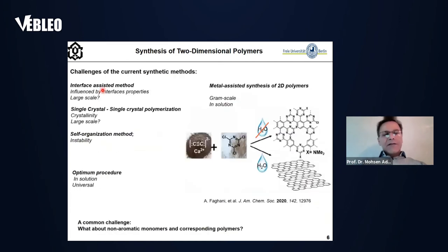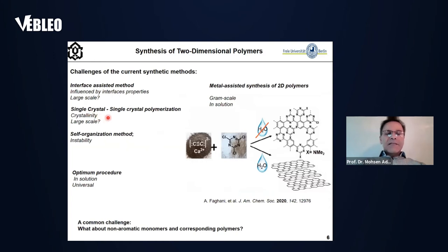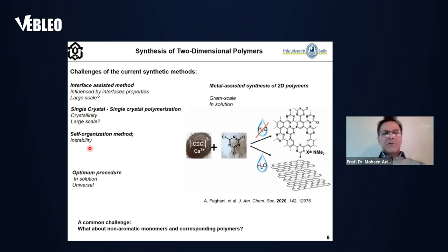In spite of the many advantages of each method, there are serious challenges. In the interface-assisted strategy, the physicochemical properties of the sublayer affect the structure of the produced two-dimensional polymers significantly. In single crystal polymerization, we cannot find many monomers that form a single crystal, and we don't know how deep stimuli factors like UV irradiation penetrate into the crystal. In the self-organization method, the problem is the instability of the produced two-dimensional polymers — for example, boronate esters are not stable in aqueous solutions. Therefore, we need an optimal method that can be performed in solution.